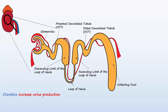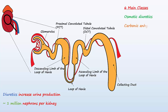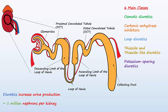There are roughly 1 million of these nephrons in each kidney. Classes of diuretics include osmotic diuretics, carbonic anhydrase inhibitors, loop diuretics, thiazide and thiazide-like diuretics, potassium-sparing diuretics, and V2 receptor or ADH antagonists.